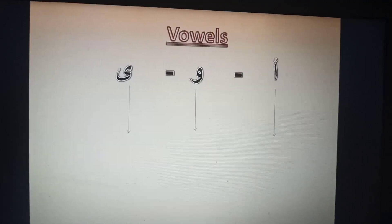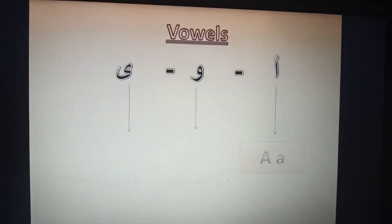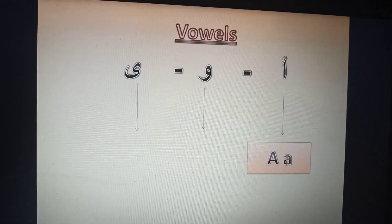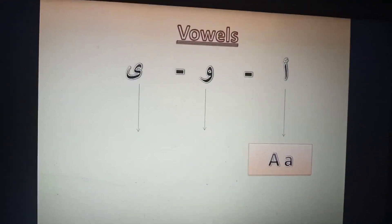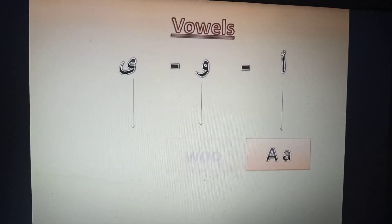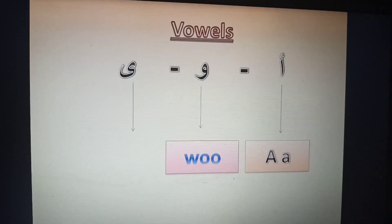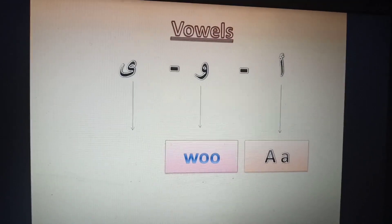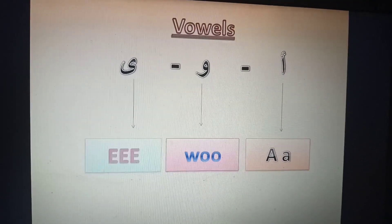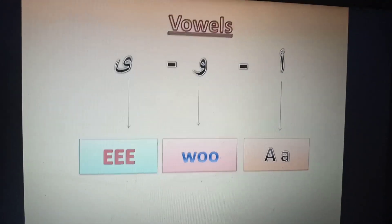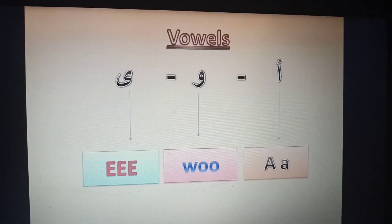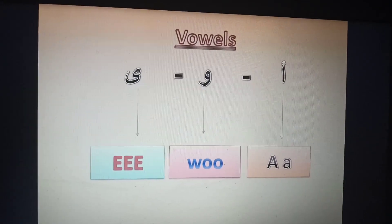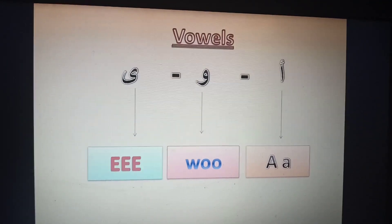The letter waw is pronounced in the middle and at the end of the word as 'wu'. The letter ye is pronounced as 'e'. So: alif is pronounced as 'a', waw is pronounced as 'wu', and ye is pronounced as 'e'. From these three vowel letters, we can derive the short vowels.